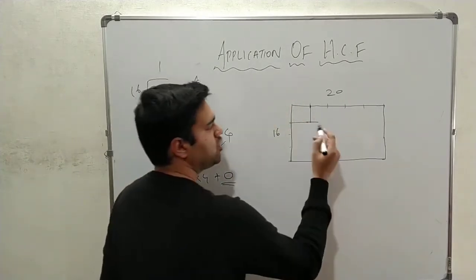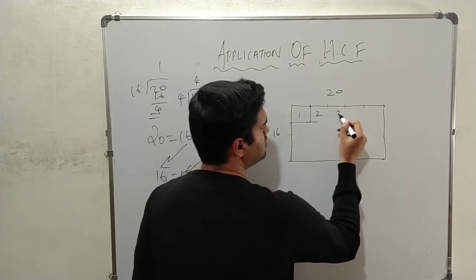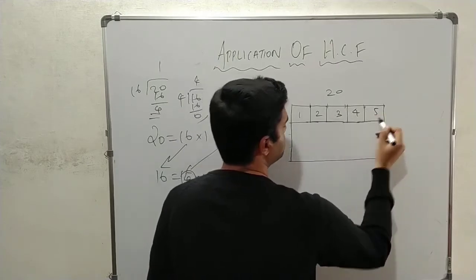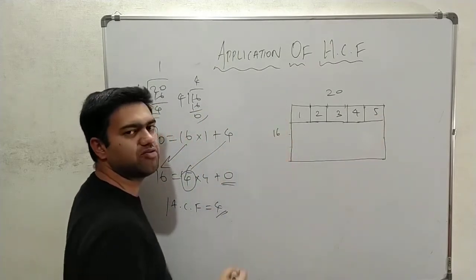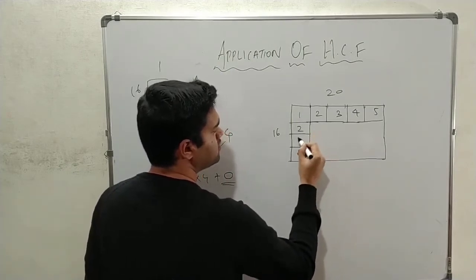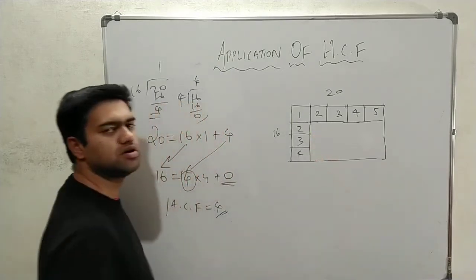5 tiles are going to be 5. 1, 2, 3, 4, 5. 5 tiles are going to be in the side. 16, 16 divided by 4 is 4. So, in the side 4 tiles lay and we are going to be 4 tiles. 2, 3, 4. Ok.